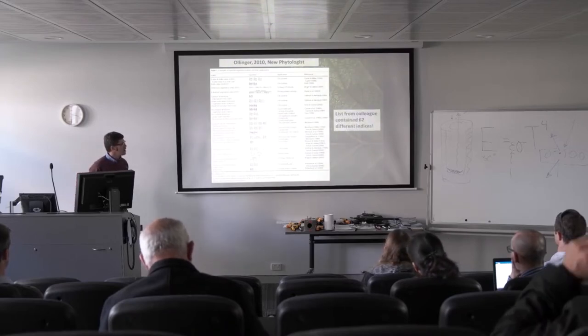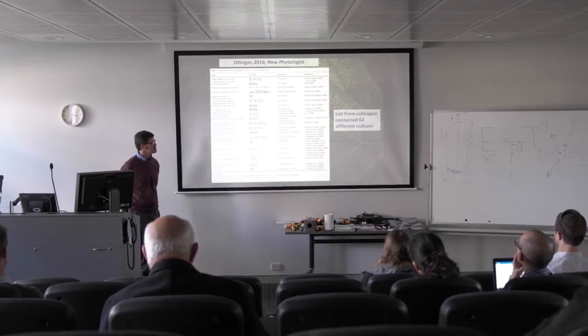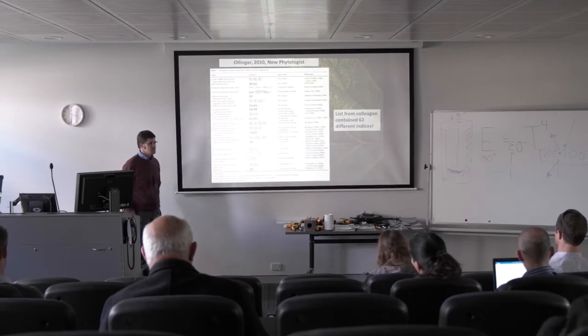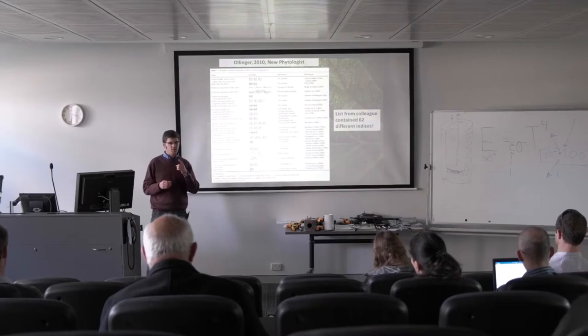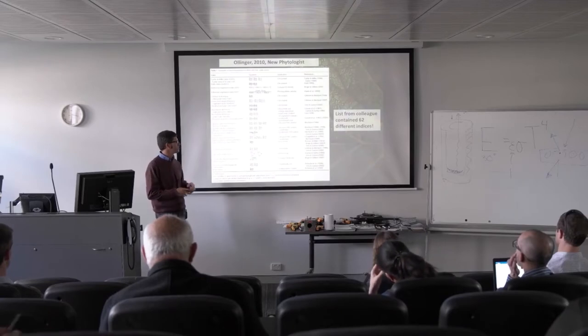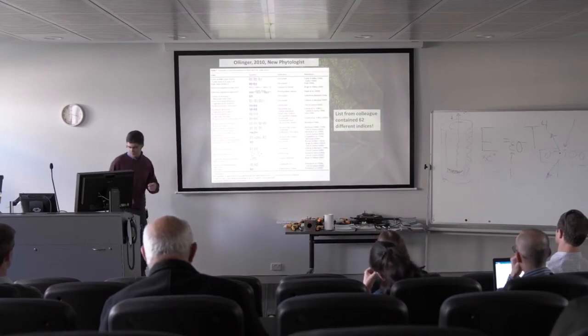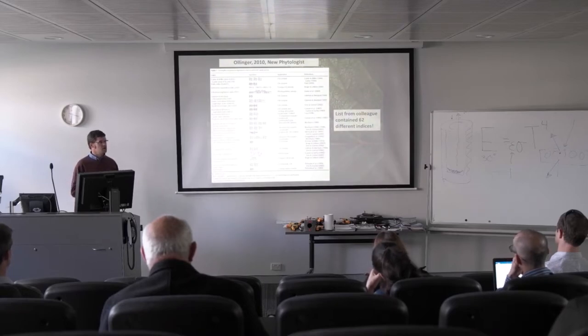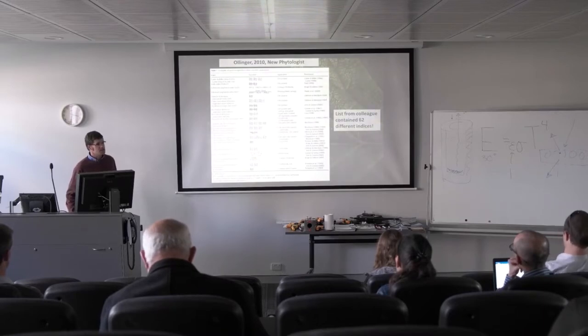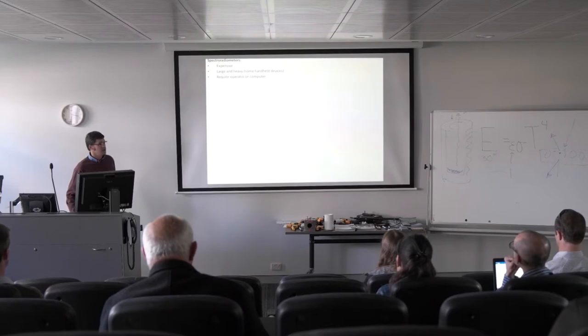I actually got a list from a colleague one time—it's unpublished, but the list she had compiled had 62 different reflectance indices in it. So there's a lot of these things out there. The point I want to make is if you're interested in one index like just NDVI or just PRI, these relatively simple two-band and sometimes three or four-band radiometers are available to give you information on a single index. But it makes sense that why not use the whole spectrum if we can, rather than trying to just build sensors for specific indices only. And so that's what a spectroradiometer gives you: a measurement of the entire spectrum.